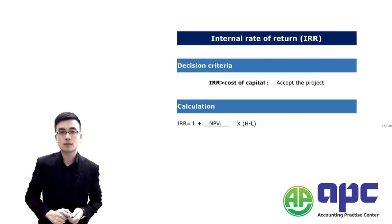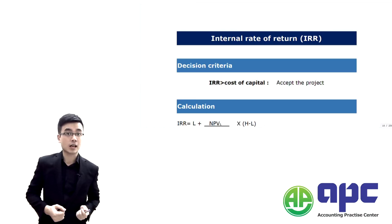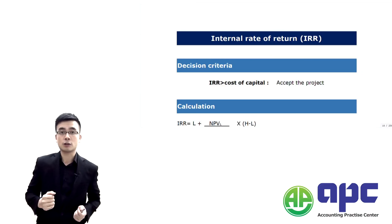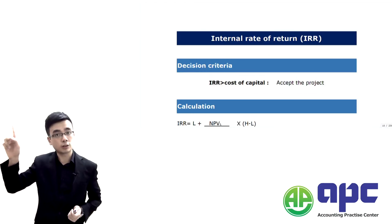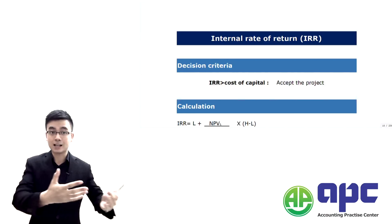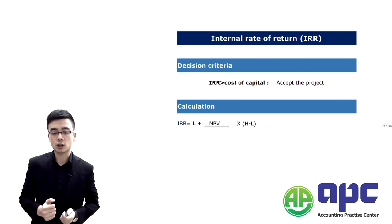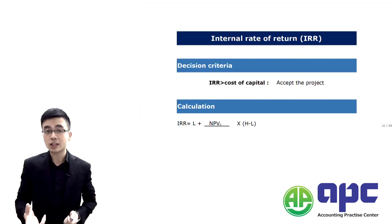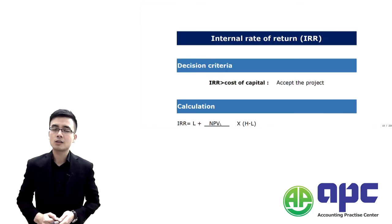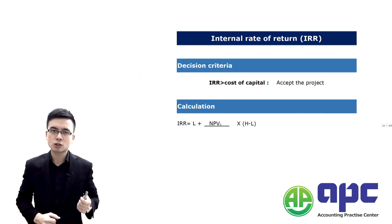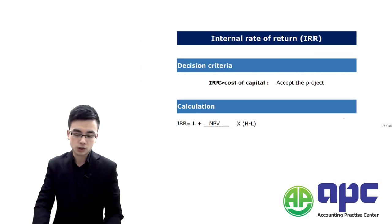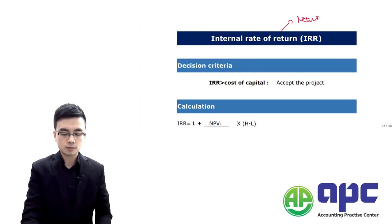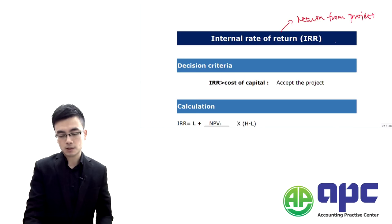But the question is: if you were to put $100 into a project and you get $30 in the first year, $100 in the second year, and $200 in the third year, what is the overall return by considering the investment out and the cash coming in? If you were to calculate the overall return for the entire project, simply using the return on investment may not be so appropriate. So what we can do is use the internal rate of return.